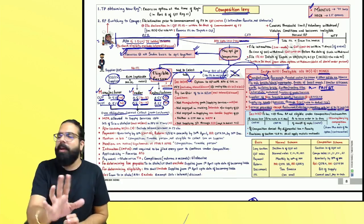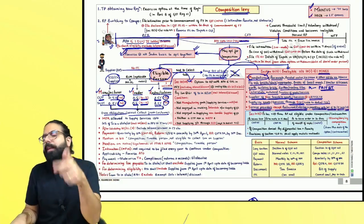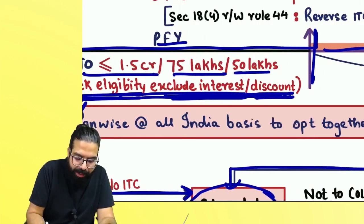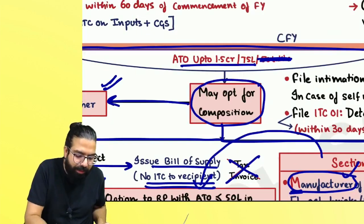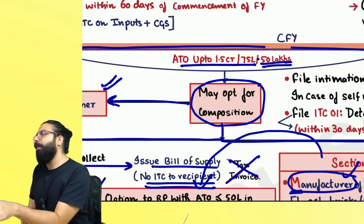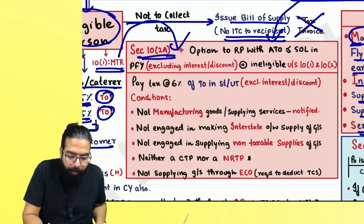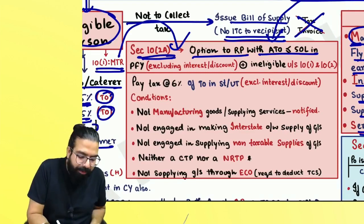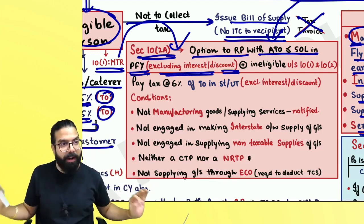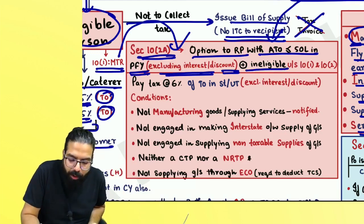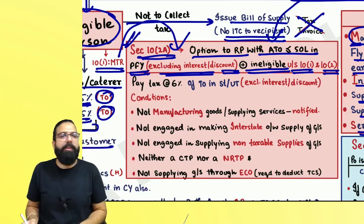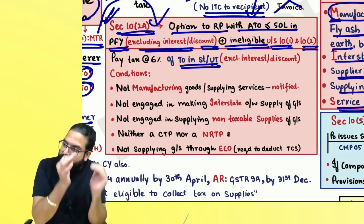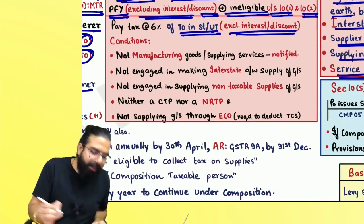Under Section 10(2A), your preceding financial year turnover will be seen — up to 50 lakh rupees. If your turnover in the last year was up to 50 lakh rupees, then in the current financial year up to a turnover of 50 lakh rupees you are eligible for Section 10(2A). The limit is 50 lakh for any state — there is no MANTUS/HOJA distinction here. Exclude interest or discount from aggregate turnover. You have to pay 3% CGST and 3% SGST, which is 6% of your turnover in the state, excluding interest and discount.